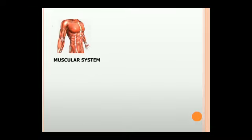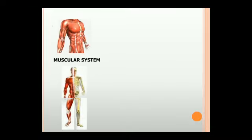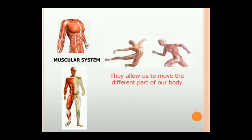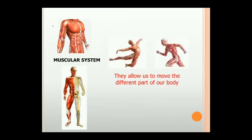All the muscles together form the muscular system. Muscles are attached to the bones in the body. Our muscular system allows us to move the different parts of our body.